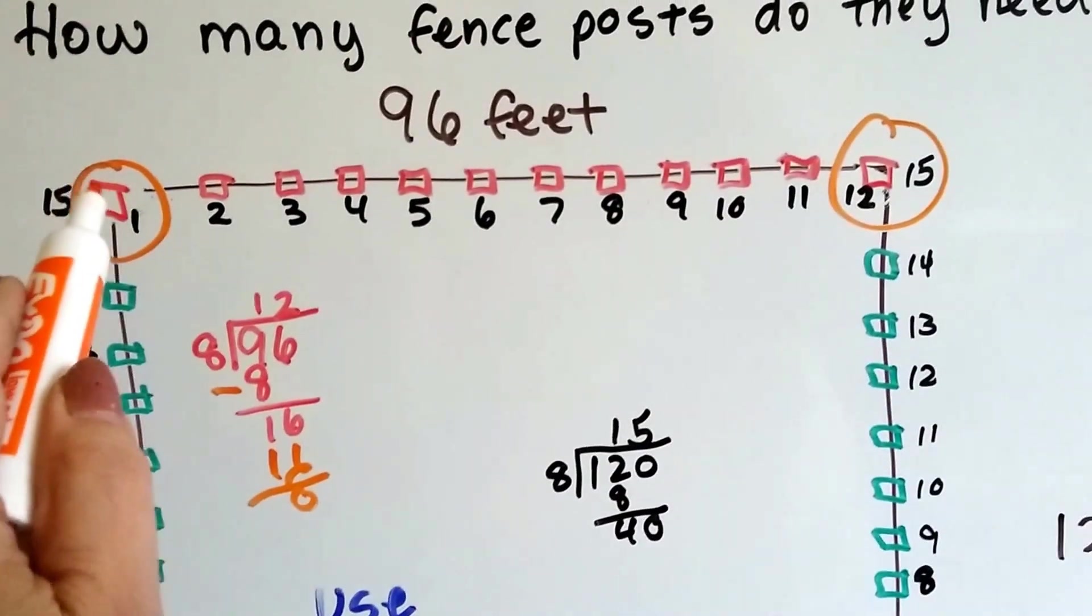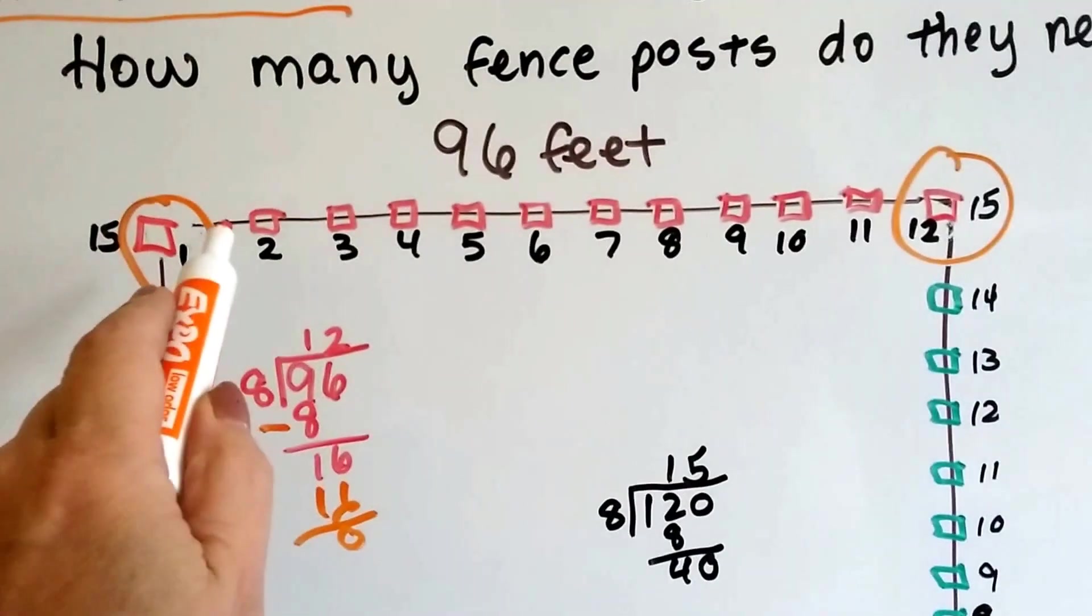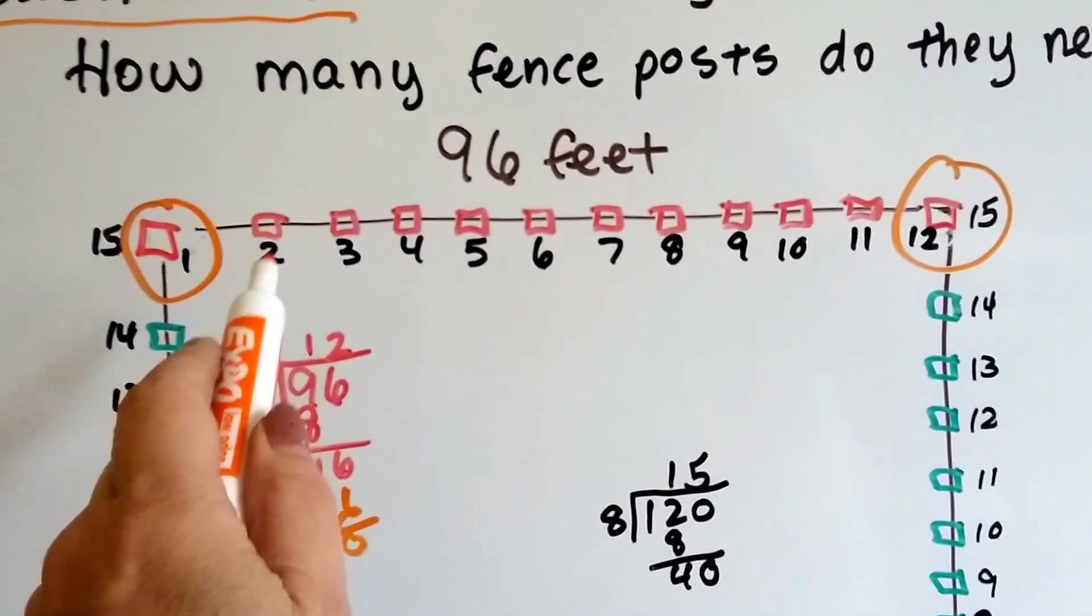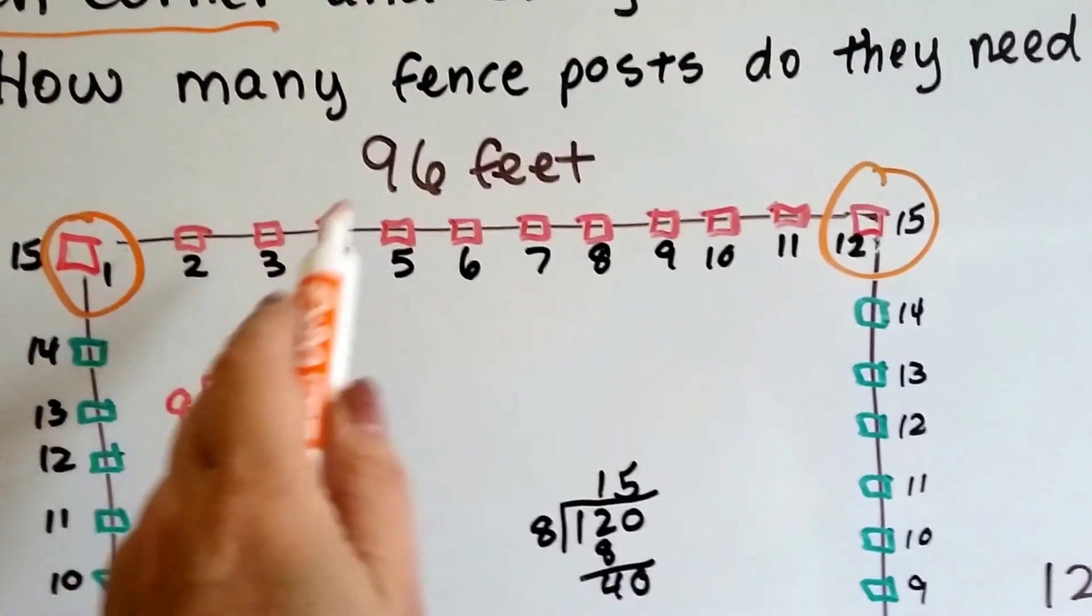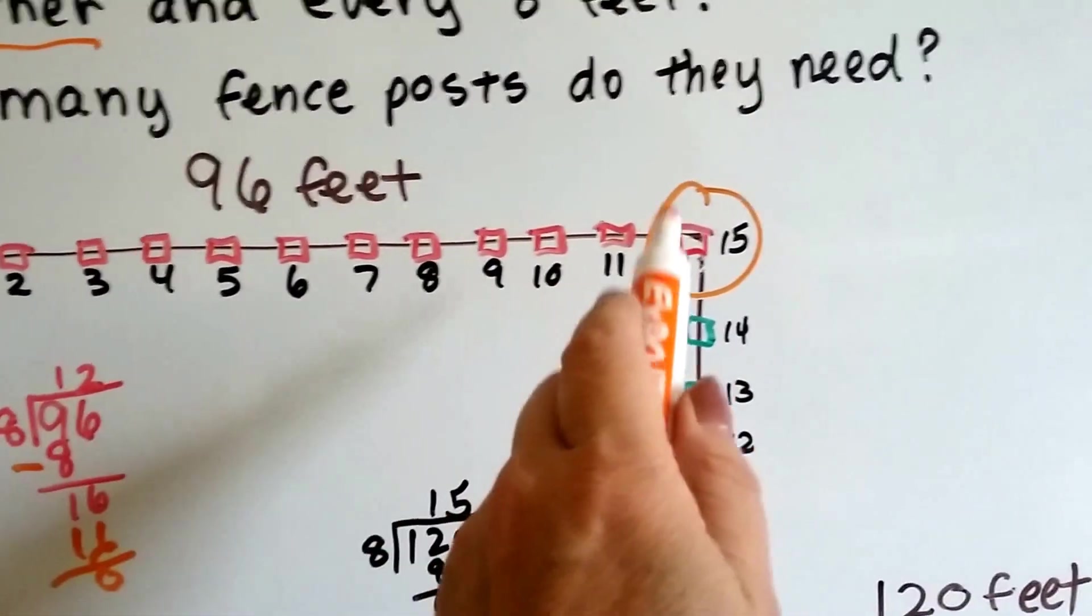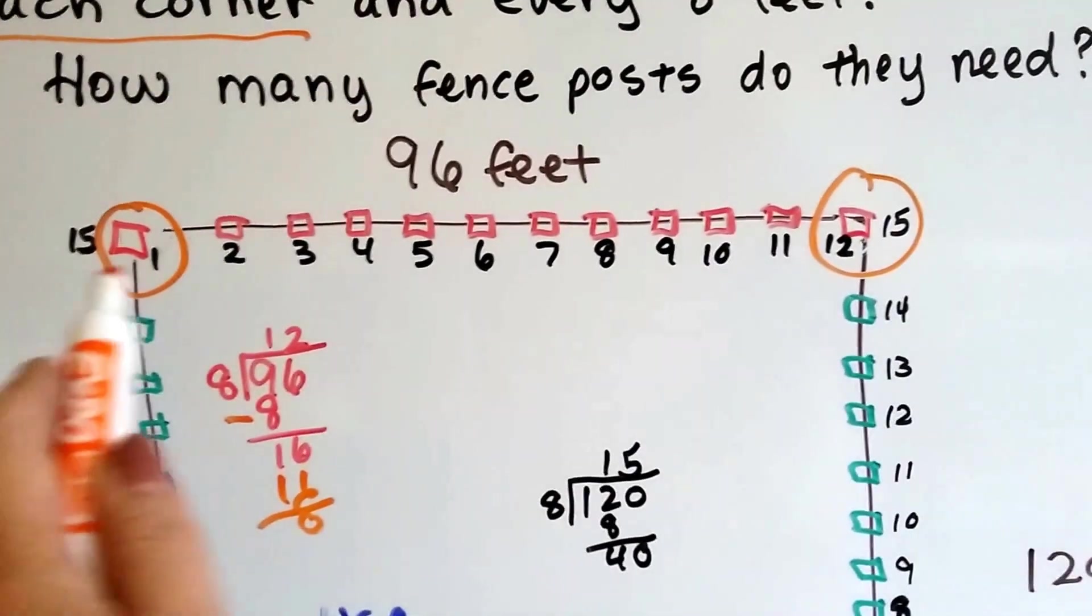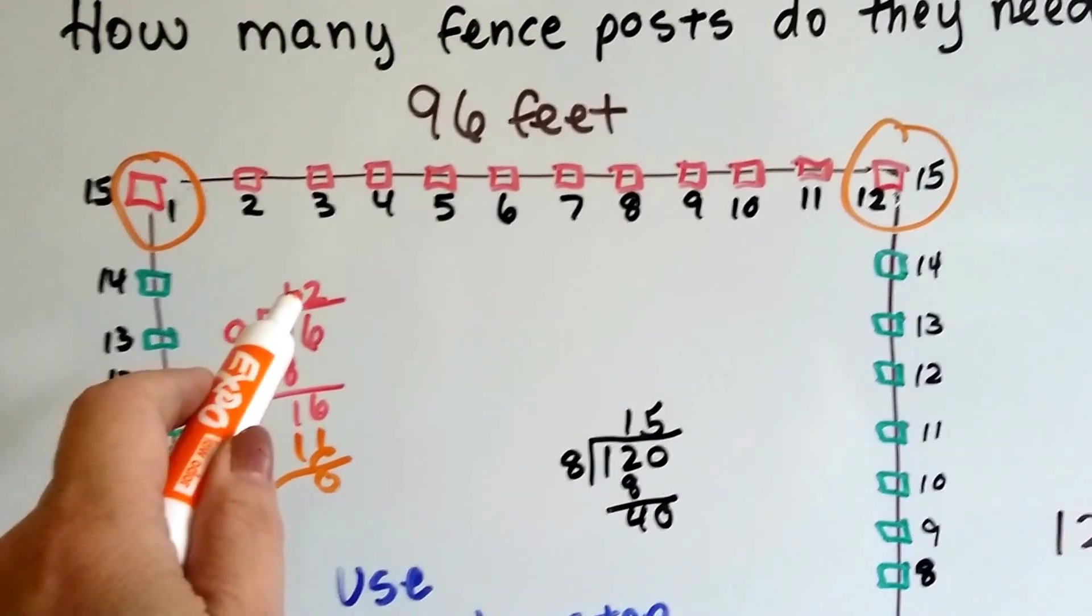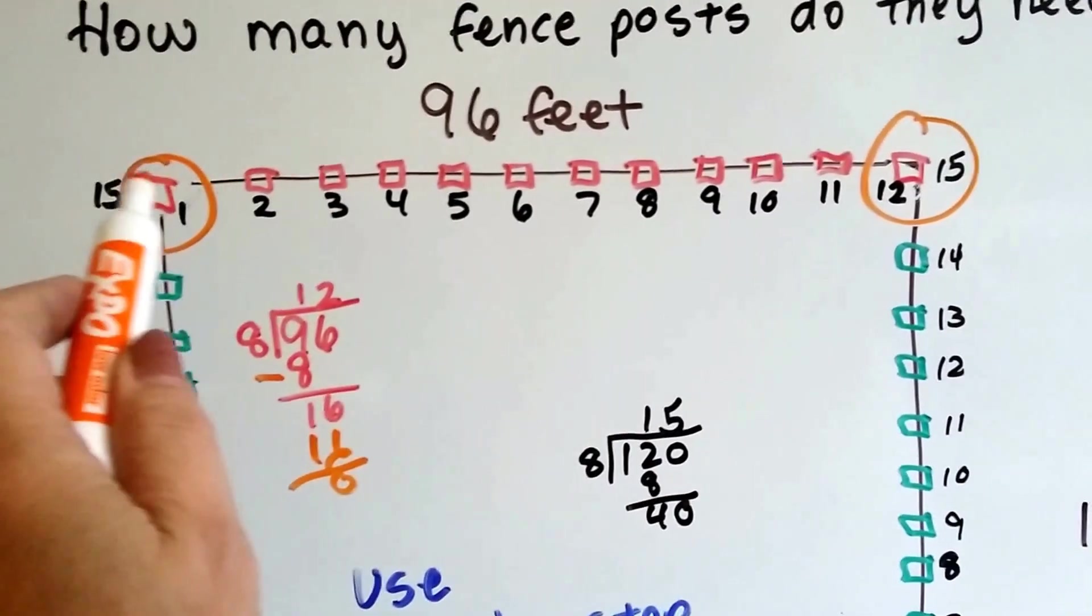I already have the corner one, so that's two that are already there. So, I needed to squeeze ten in between here evenly. So, I got one, two, three, four, five, six, seven, eight, nine, ten, eleven, twelve. So, there's twelve just like the eight goes into ninety-six twelve times. So, I know they're every eight feet.